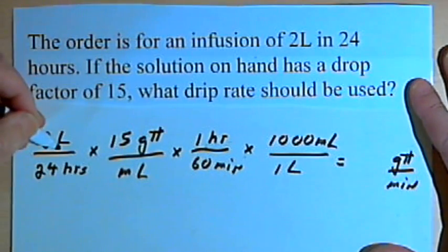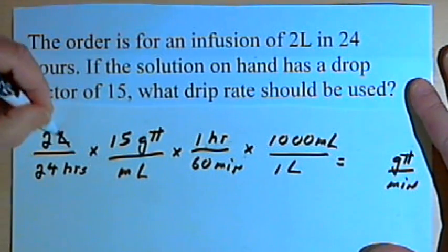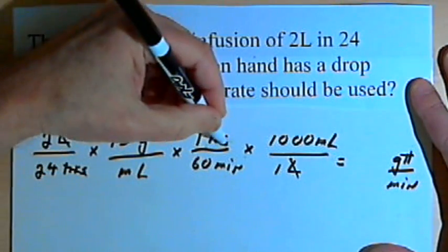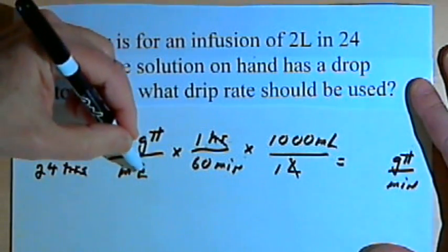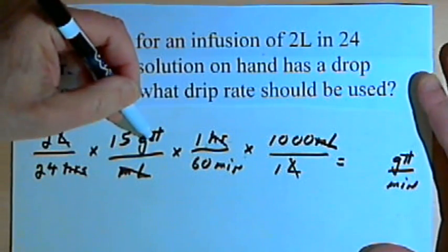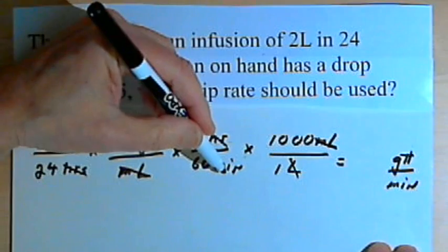Now let's cancel the units that we can. The liters cancel, the hours cancel, and the milliliters cancel. I've just got gtt in the numerator and minutes in the denominator.